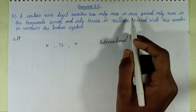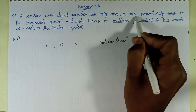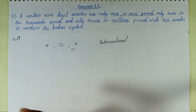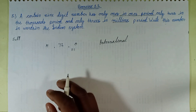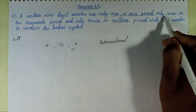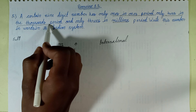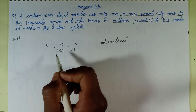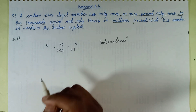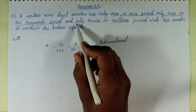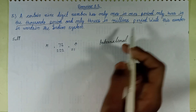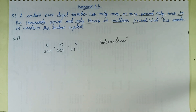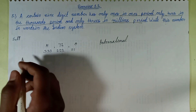Only 1 in the ones period — that means 3 digits with 1 in the ones period. Only 2 in the thousands period — a group of 3 digits in the thousands period. Only 3 in the millions period — write in a group of 3 digits in the millions period. This is the International System of Numeration.